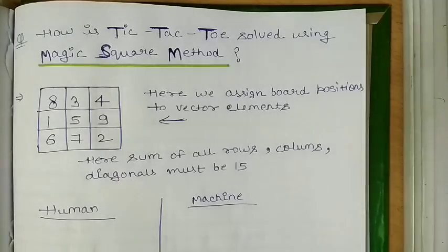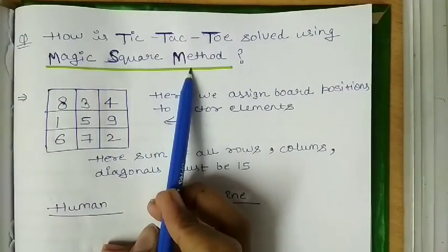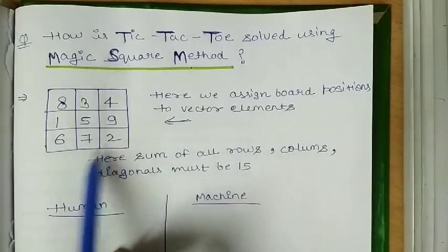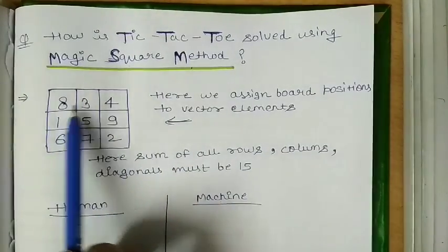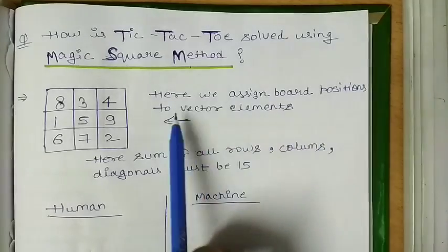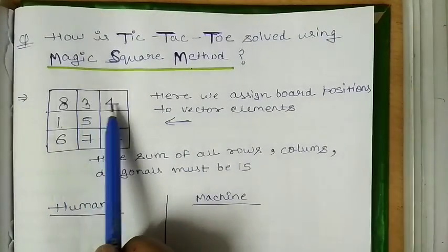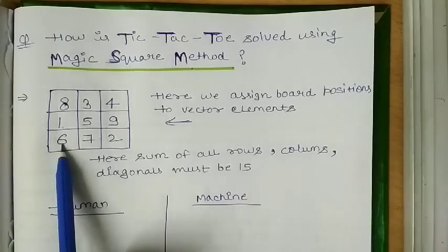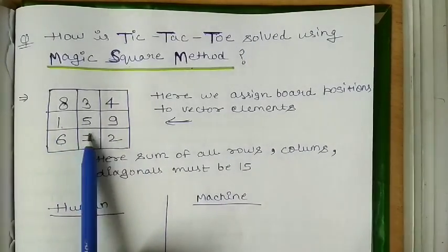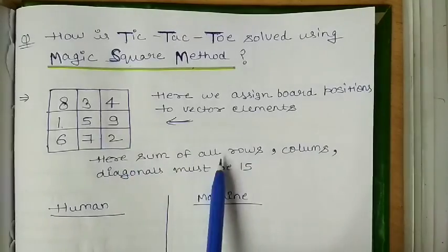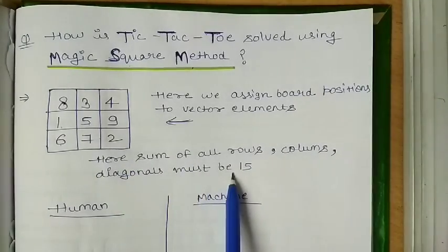The method to solve the tic-tac-toe problem is using the magic square method. Here we have a board in which elements must be assigned like this. We assign board positions to vector elements 1, 2, 3, 4, 5, 6, 7, 8, 9. We have to write these elements like this only. The sum of all rows, all columns, and all diagonals must be 15.